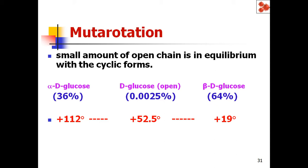The cyclic forms are interconvertible and change automatically over the course of time. After reaching equilibrium, there will be 36 percent alpha-D-glucose and 64 percent beta-D-glucose, with only a small amount of open-chain D-glucose remaining. At equilibrium, the optical rotation is plus 52.5 degrees — neither plus 112 degrees nor plus 19 degrees.